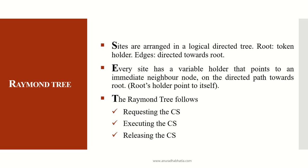The sites are arranged in a logical directed tree. The root is where the token is held, so root is known as the token holder initially. All edges are directed towards the root, and every site has a variable called 'holder' that points to an immediate neighbor node on a directed path towards the root. The root's holder points to itself, and all other nodes and edges point towards the root as the initial state of the Raymond Tree algorithm.